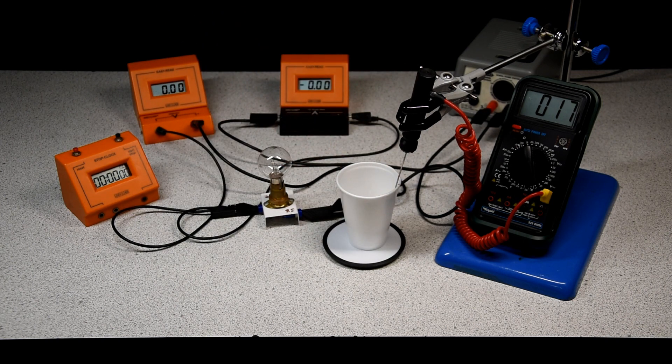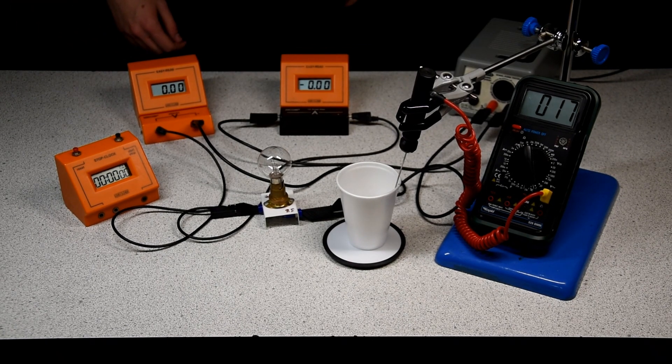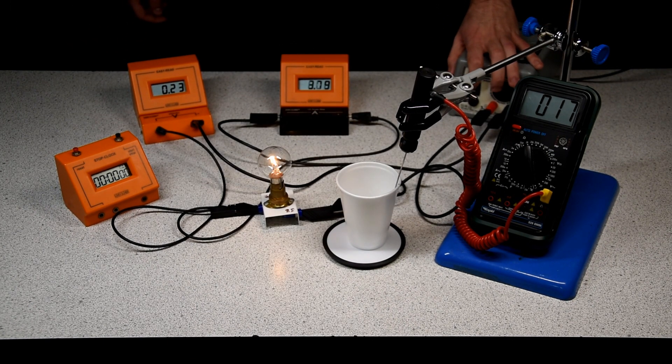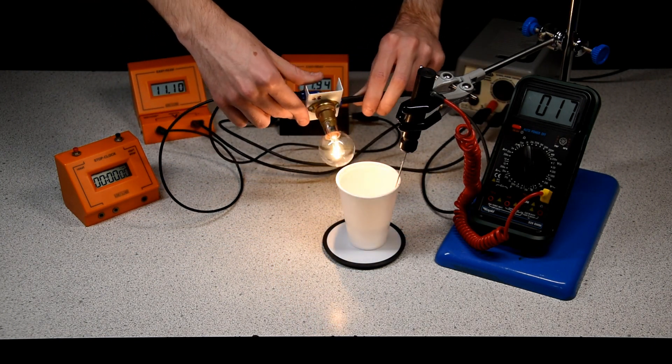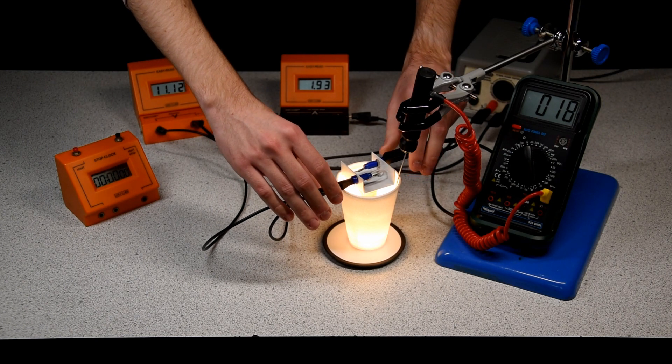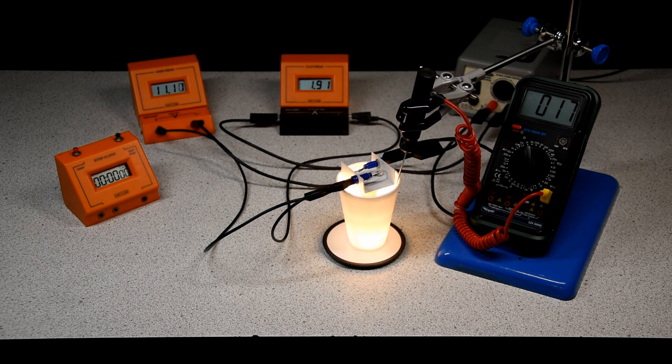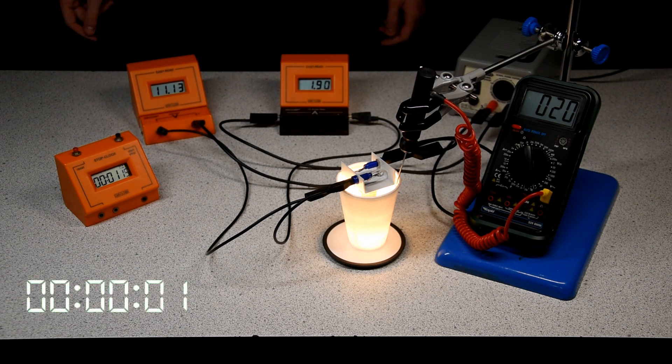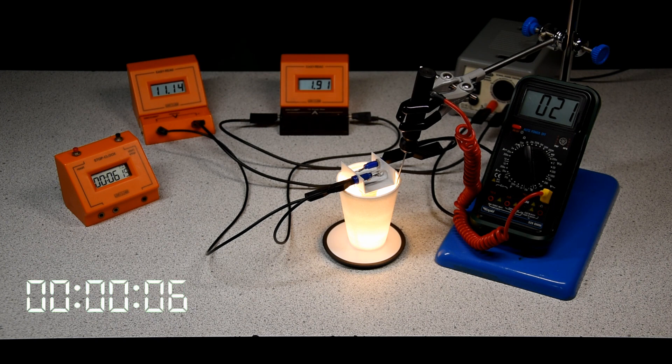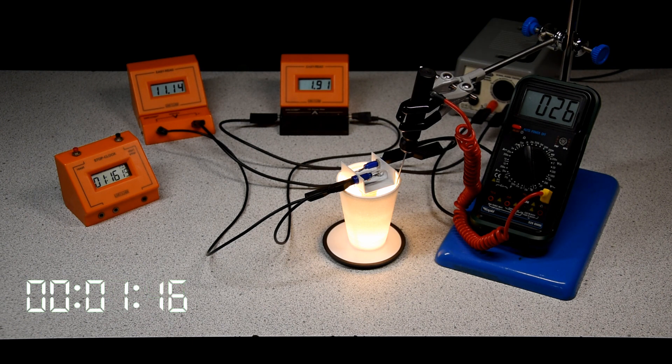50 centimeters cubed of water has a mass of 50 grams. Perhaps unusually, we're going to use a lamp as our source of heat, though we already know that lamps produce about 80% heat and 20% light. The electrical energy into the system can be found from the equation: electrical energy equals I times V times T, amps times volts times time. Having allowed the temperature to equalize, I have started the stopwatch and recorded the starting temperature.